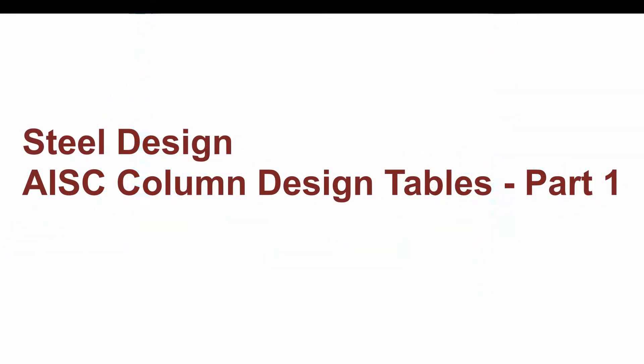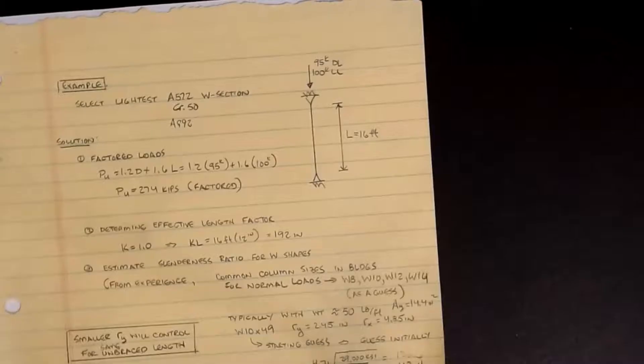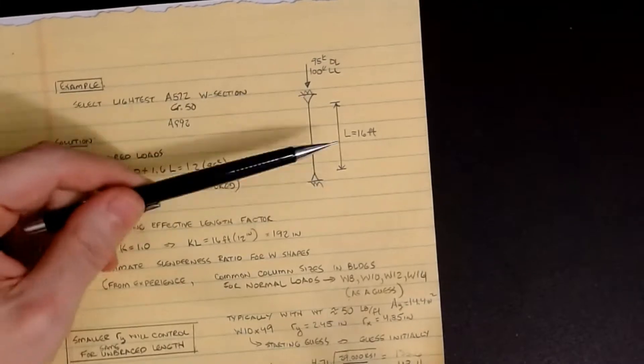We'll start by looking at that same example from our last video in which I had 95 kips dead load, 100 kips live load, and a column length of 16 feet.